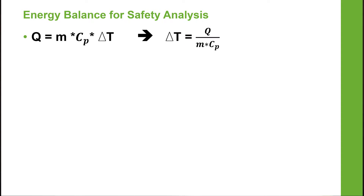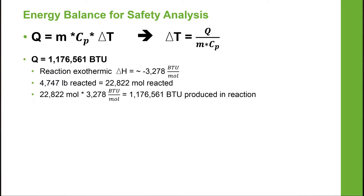With the standard energy balance equation Q equals MCP delta T, I was able to calculate my Q value based on the heat of reaction that was known for the reaction that was occurring. I knew how many pounds of material would be reacting and what the heat of reaction was, and with those two numbers I was able to calculate the total BTUs that would be produced by the reaction.